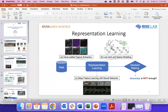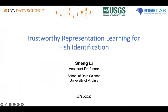Hello, everyone. Thank you, Emma, for the introduction. My name is Sheng Lee, and currently I'm an assistant professor of data science. I'd like to introduce our recent project on trustworthy representation learning for fish identification. This project is relevant to environmental resilience because of the study object — we want to understand the fish behavior and the fish population in river networks.